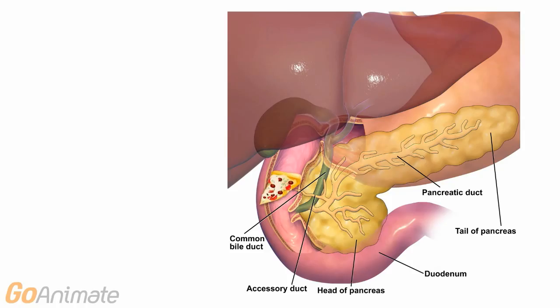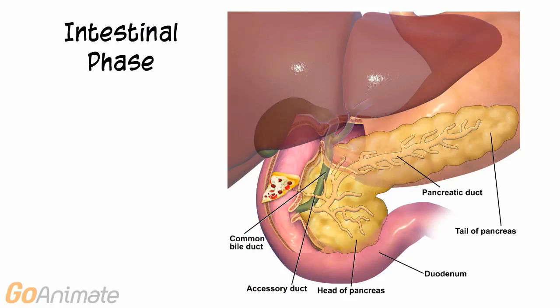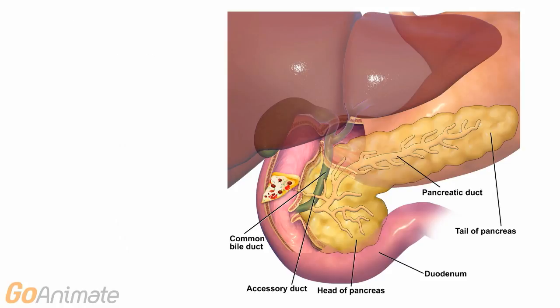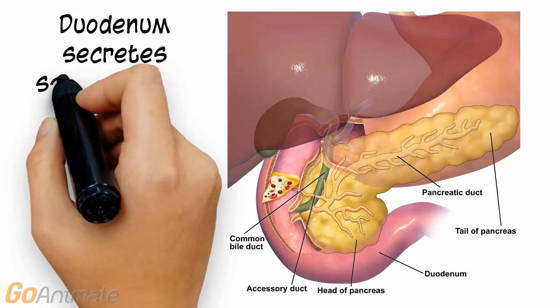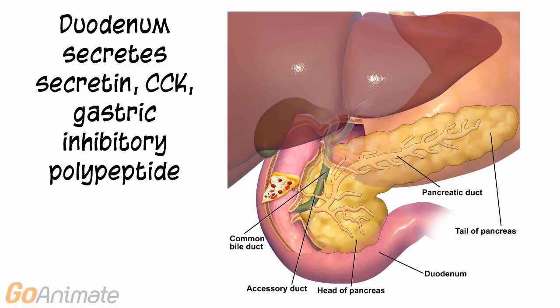In the intestinal phase, chyme enters the duodenum and stimulates the enterogastric reflex. Acidic chyme inhibits parasympathetic impulses via the vagus nerve. The duodenum also secretes secretin, cholecystokinin, and gastric inhibitory polypeptide, that work to inhibit gastric secretions.